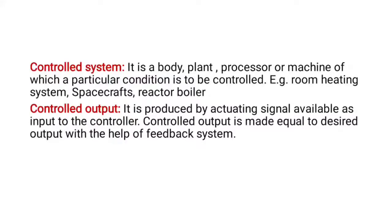For the room heating system example, if you want to increase the room temperature from 25 to 30 degrees Celsius, an amplifier is used to increase the heat. The controlled output is produced by the actuating signal given as input to the controller. The controlled output is made equal to the desired output with the help of the feedback system. Our main aim is that the controlled output should equal the desired output.